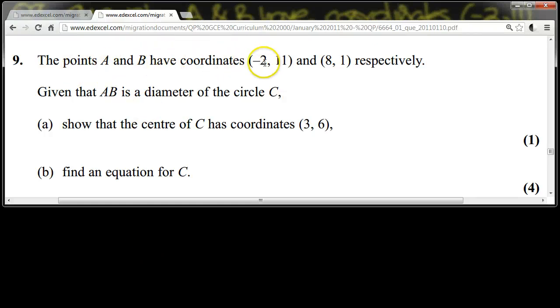The points A and B have coordinates (-2, 11) and (8, 1) respectively. Given that AB is a diameter of the circle C, show that the centre of C has coordinates (3, 6) and find an equation for C.